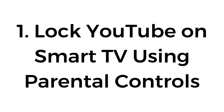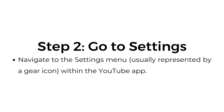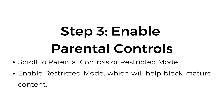Number one: lock YouTube on smart TV using parental controls. Step one: open the YouTube app. Step two: go to settings — navigate to the settings menu, usually represented by a gear icon, within the YouTube app. Step three: enable parental controls. Scroll to parental controls or restricted mode and enable restricted mode, which will help block mature content.